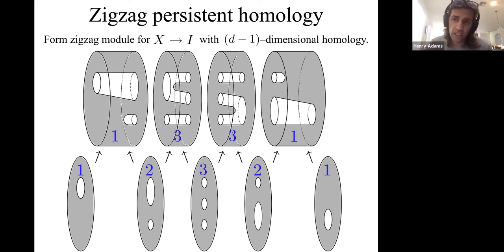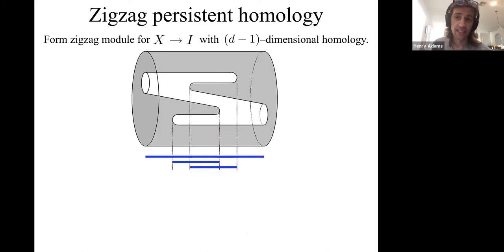You can still compute an analog of persistent homology here, called zigzag persistent homology. Not only do you count the number of holes in each space—this space has one hole, two holes, three holes, two holes, and one hole, and you can count the holes in these slices too—but you use the structure of vector spaces and functoriality to link up the number of holes in each space into bars.